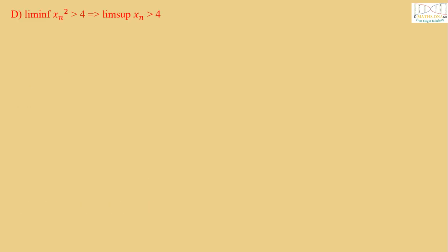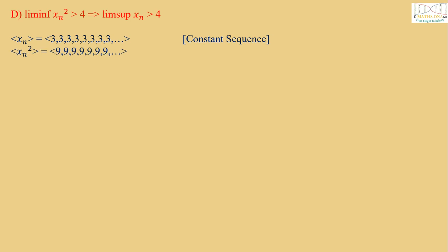Now for Option D: limit infimum Xn² > 4 implies limit supremum Xn > 4. Consider the constant sequence Xn = 3, 3, 3, and so on. We get Xn² = 9, 9, 9, and so on. Then limit infimum Xn² = 9, which is greater than 4. But limit supremum Xn = 3, which is not greater than 4. Therefore Option D is also false.